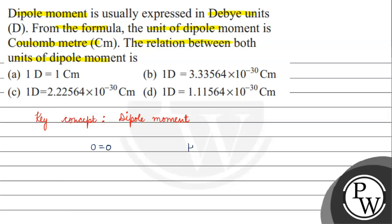But if you have a molecule like HF, where fluorine is more electronegative and hydrogen is less electronegative, then all electron density shifts toward fluorine. Fluorine becomes partial negative and hydrogen becomes partial positive.